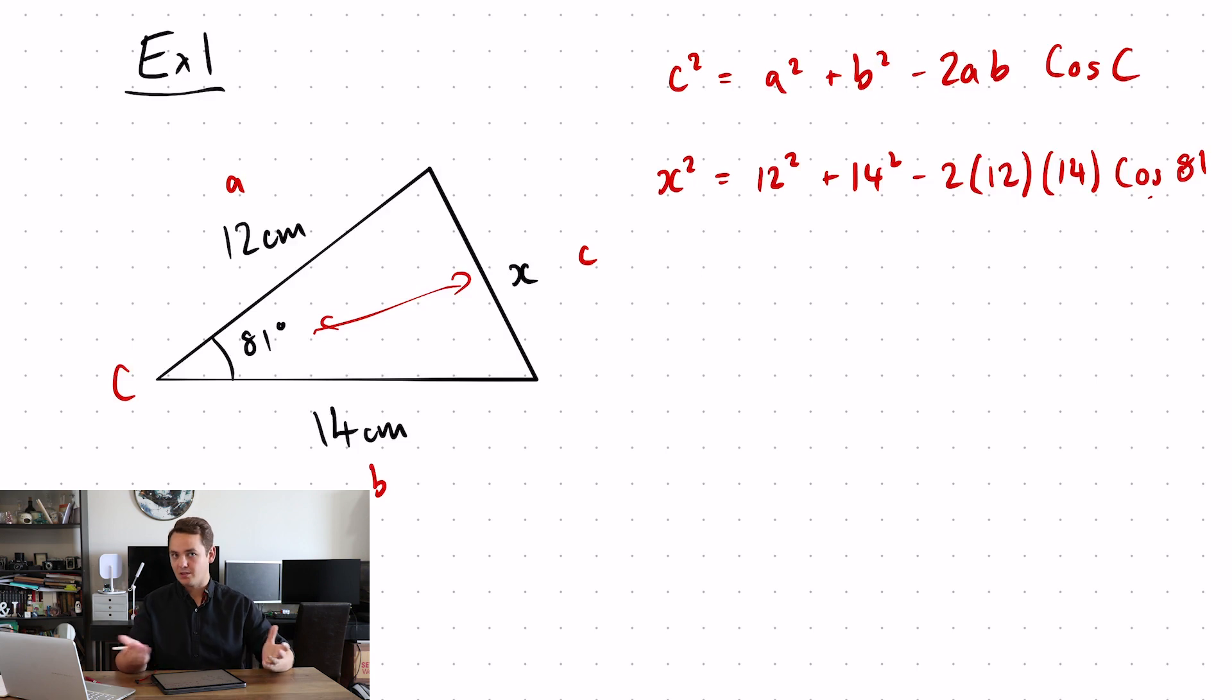At the moment I'm calculating X squared. Obviously I want to find out what just X equals because that's my side. So X is equal to the square root of all of that 12 squared plus 14 squared minus 2 lots of 12, 14 cos 81.